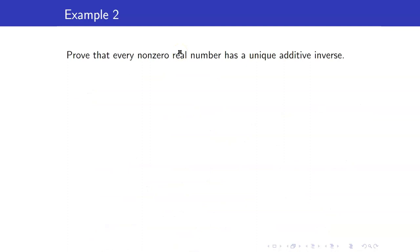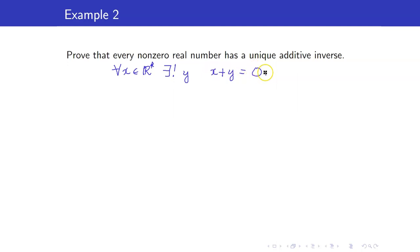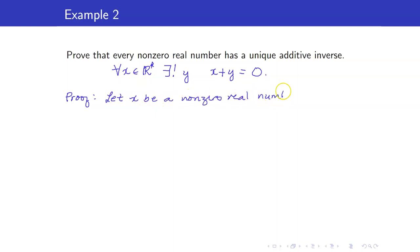Next, let us prove that every non-zero real number has a unique additive inverse. In symbols: for every x in R* (meaning x is a non-zero real number), there exists a unique additive inverse y satisfying x plus y equals 0. We start with: let x be a non-zero real number. The choice of y depends on x since the existential quantifier falls after the universal one. Our y is, of course, negative x.